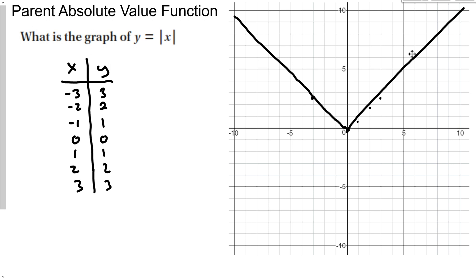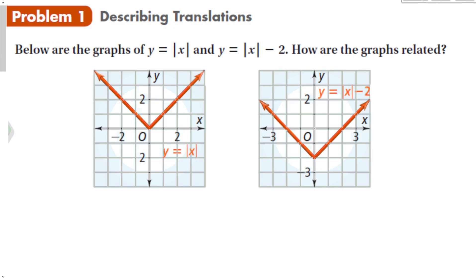The vertex is going to be in a different position and all the other points are going to be in different positions. Below is the graph of the parent function y equals the absolute value of x, and y equals the absolute value of x minus 2. Notice the vertex of the parent function is at (0, 0), while the vertex of y equals the absolute value of x minus 2 is at (0, negative 2).